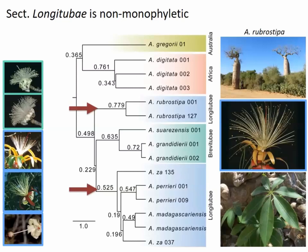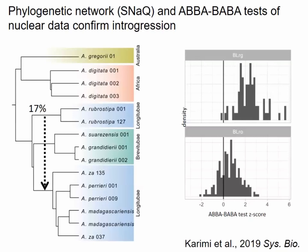We had several hypotheses to explain this pattern. What we found was that about 17% of the genome of rubrosstippa introgressed into the core Longitubae clade — meaning the ancestor of the remaining three Longitubae species hybridized and back-crossed with the ancestor of rubrosstippa, with about 14% of its genome introgressing into the remaining Longitubae clade.